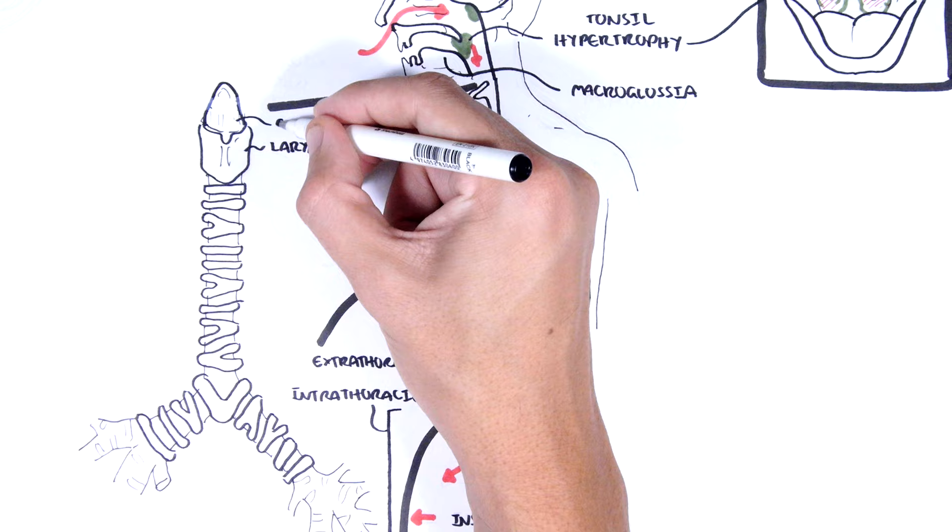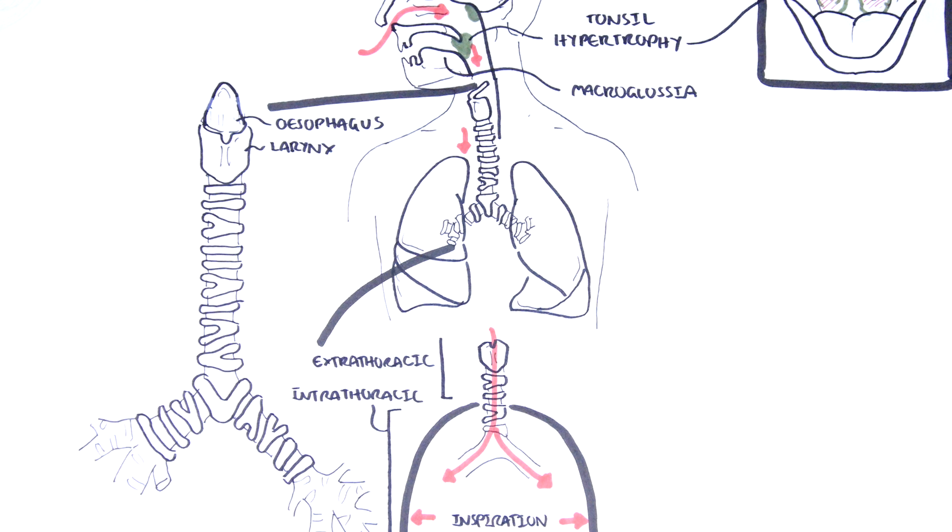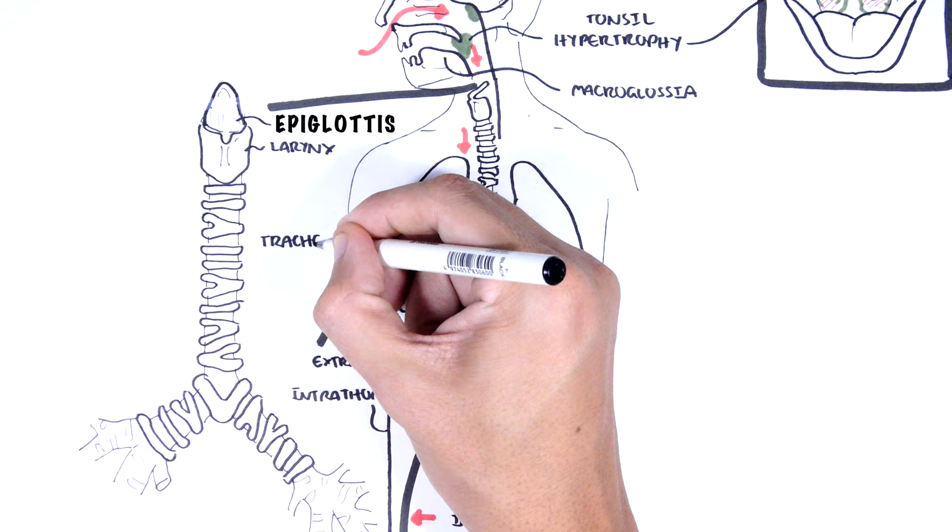Here is the larynx and here is the epiglottis. So again, here is the larynx and above it is the epiglottis, which closes the entrance to the lower airways during swallowing, and this is to prevent food from entering the airways.